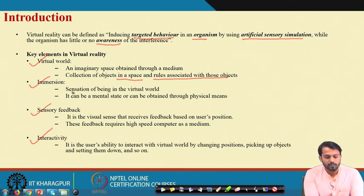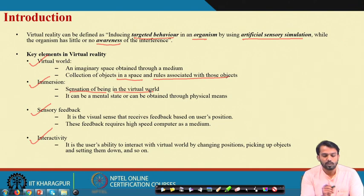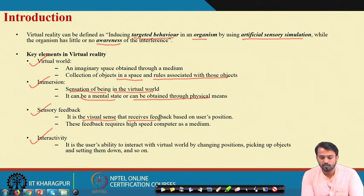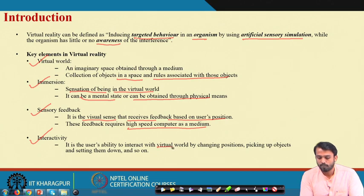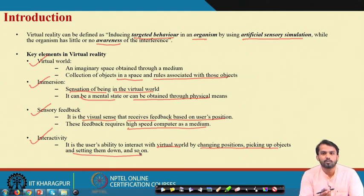Immersion means the sensation of a user being present in the virtual world — it can be a mental state or obtained through physical means. Sensory feedback is the visual sense that receives feedback based on the user's position, requiring a high-speed computer with a high-end graphics card and high-speed RAM. Interactivity is the user's ability to interact with the virtual world by changing position, picking up objects, and setting them down, using hand tracking devices and sensors.